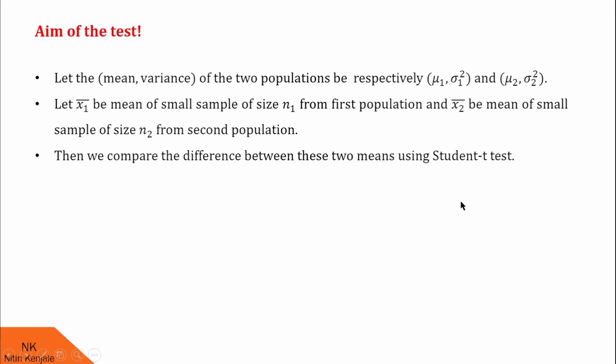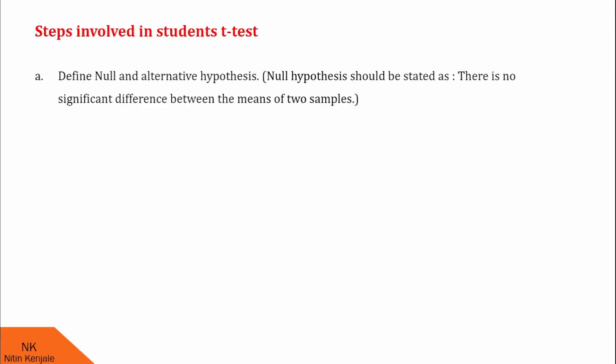Now let us see the steps involved in this test. In step 1, we define the null and alternative hypothesis. The null hypothesis should be stated as: there is no significant difference between the means of two samples. Therefore, the alternative hypothesis will be: there is a significant difference between the means of two samples.